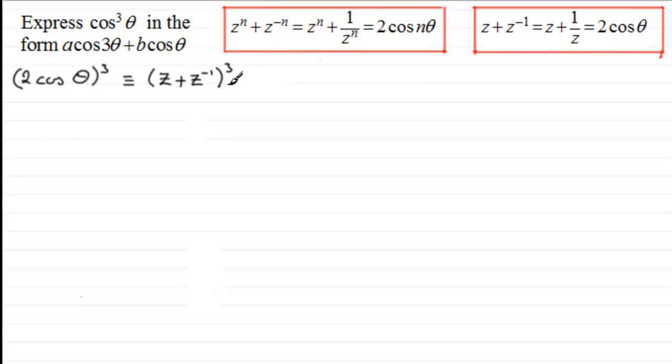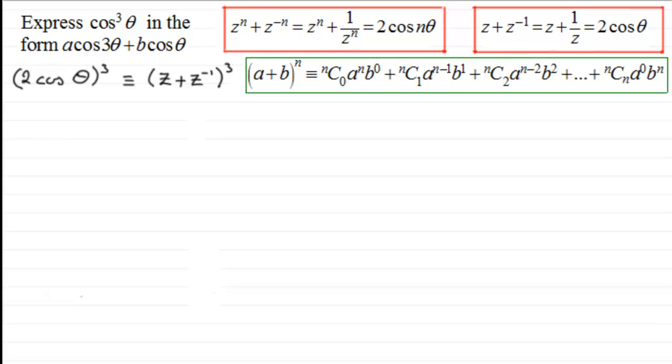Now what we need to do is expand this bracket. One way that we can do it is by using the binomial expansion (a + b)ⁿ. I'm assuming that you're familiar with it. So if we expand this according to that formula, where a is z, b is z⁻¹, and n is 3, then what we've got is ³C₀ and then we've got aⁿ which will be z³ and then b⁰, b being z⁻¹, so z⁻¹ to the power 0. Then we move on to the next term and continue the process. So it's going to be ³C₁, z² and then z⁻¹ to the power 1.